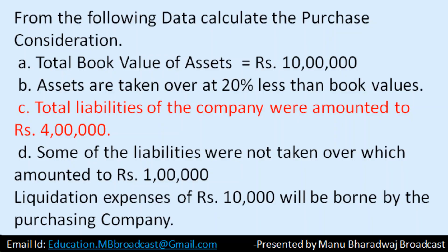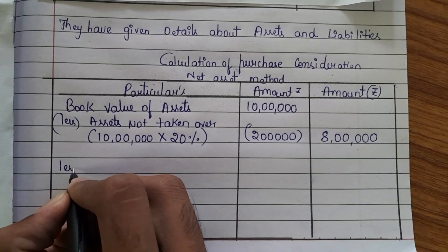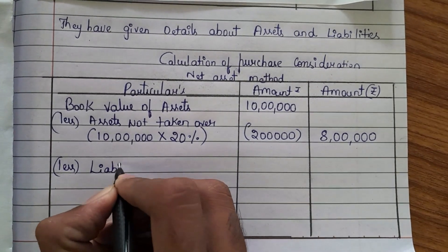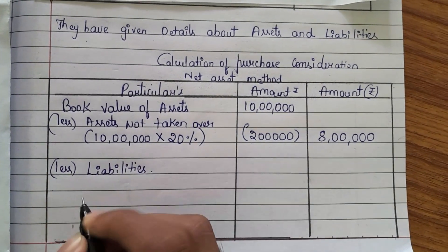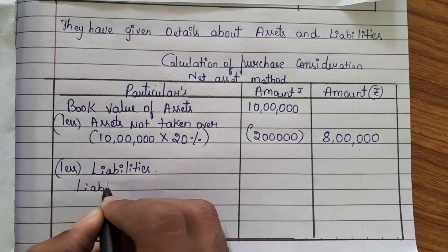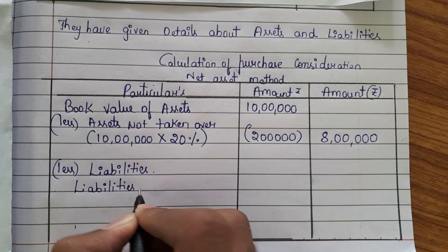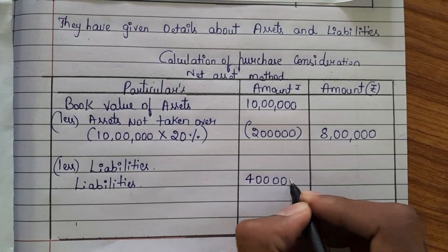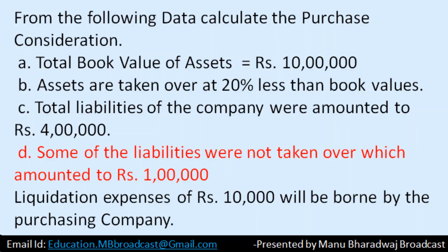Next, see question C. Total liabilities of the company amounted to rupees 4 lakh. From assets, we have to reduce the value of liabilities. The liabilities of the company is 4 lakh. Question D: some of the liabilities were not taken over, which amounted to rupees 1 lakh.